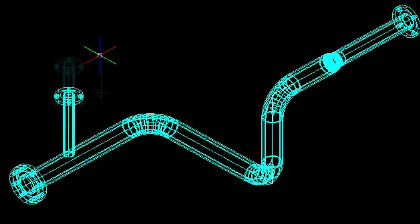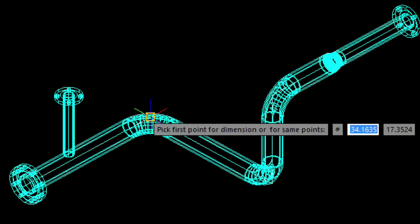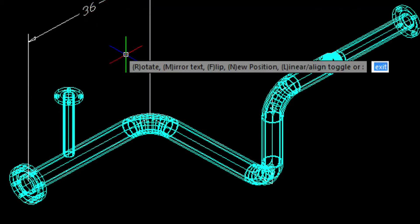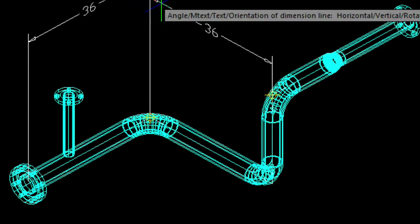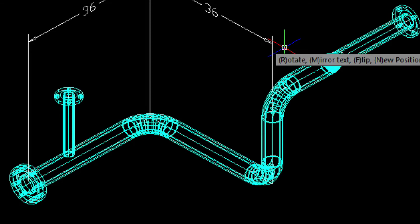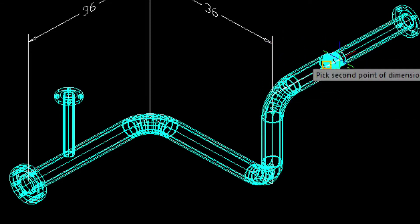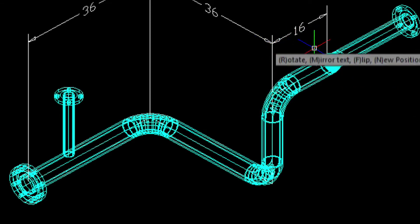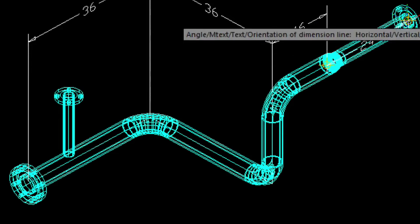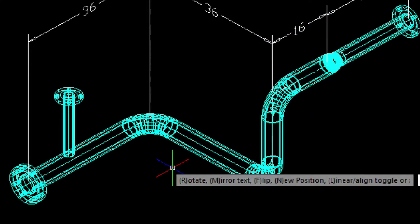Next, let's add a few dimensions to specify the lengths from centerline to centerline. To dimension, we just need to snap the piping nodes and place the dimension where we need it. Working in 3D really isn't as hard as you may think. With just a little practice, you'll get it.